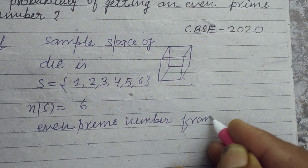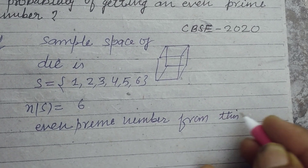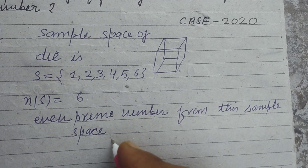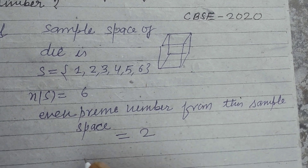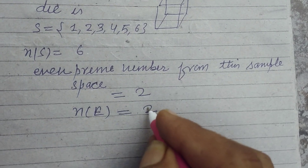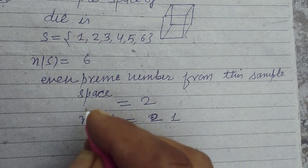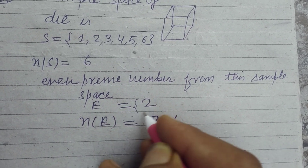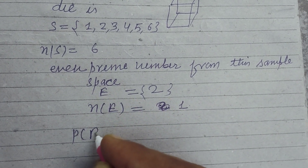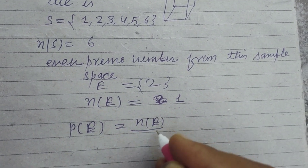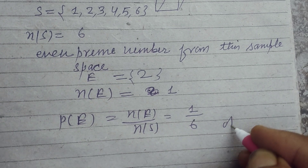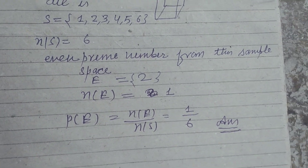From the sample space, the even prime number is 2, so the favorable event E is equal to {2} and n(E) is equal to 1. Therefore, probability P equals n(E) over n(S), which is 1 over 6. So 1/6 is the answer to this question.